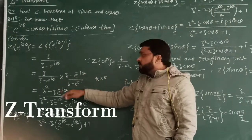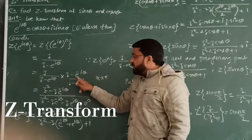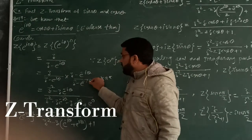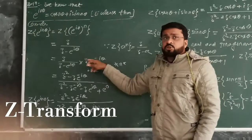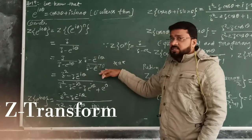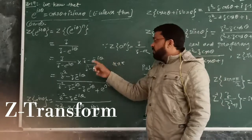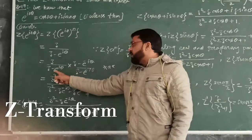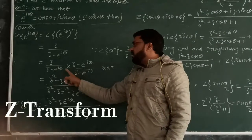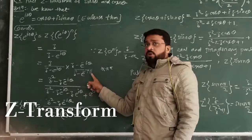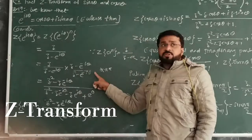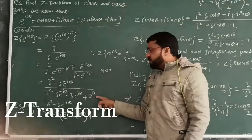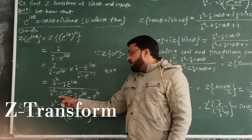Now, what we do here — I just multiply and divide by (Z minus e raised to the power minus i·n·θ). Here we have i·n·θ and minus i·n·θ, which will sum to 0. e raised to the power 0 is 1. So we proceed by using this conjugate multiplication.